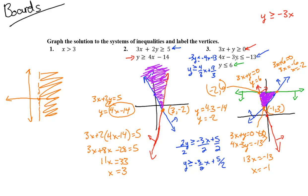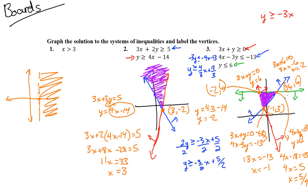Last vertex: intersect the blue line 4x - 3y = -13 and the green line y = 6. Substituting y = 6: 4x - 18 = -13, so 4x = 5, x = 5/4. The vertex is (5/4, 6). Note it's not drawn perfectly to scale on the graph, but we've now found all three vertices — (-1,3), (-2,6), and (5/4, 6) — and colored in the correct solution region.